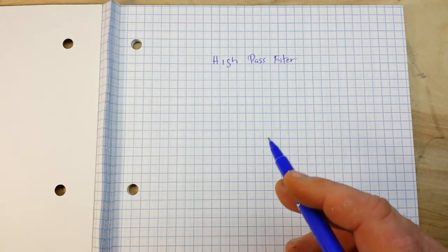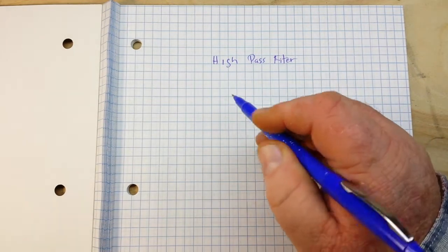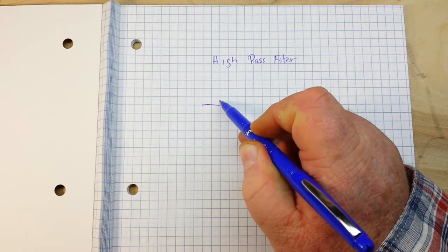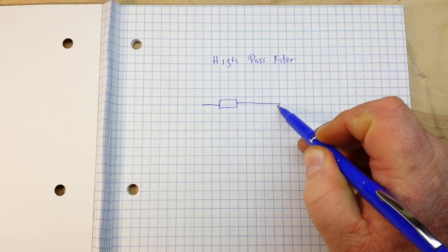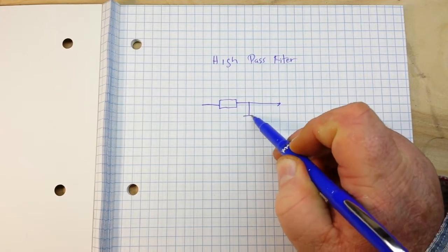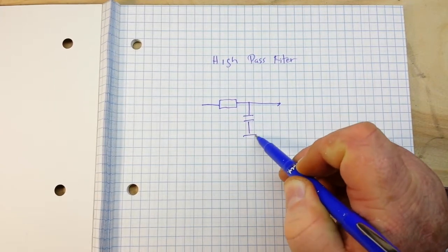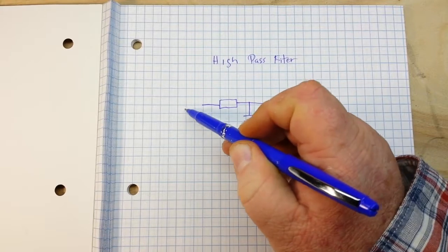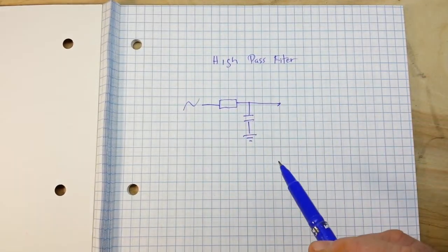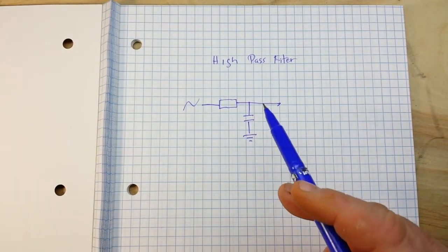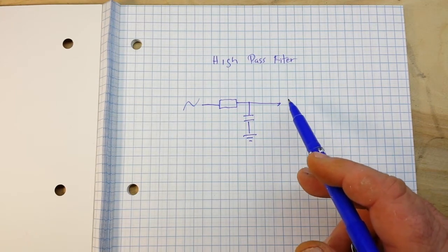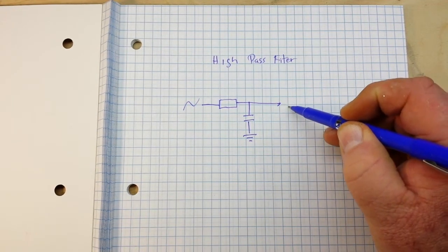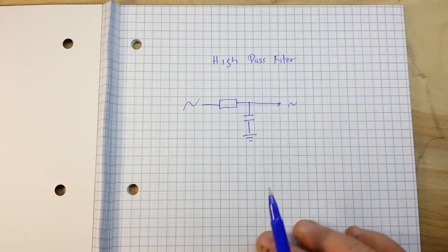You remember from our last video on the low-pass filter what it looked like. We had a resistor and a capacitor going to ground and our signal came in here. And when it reached the cutoff frequency, anything higher than the cutoff frequency was attenuated.